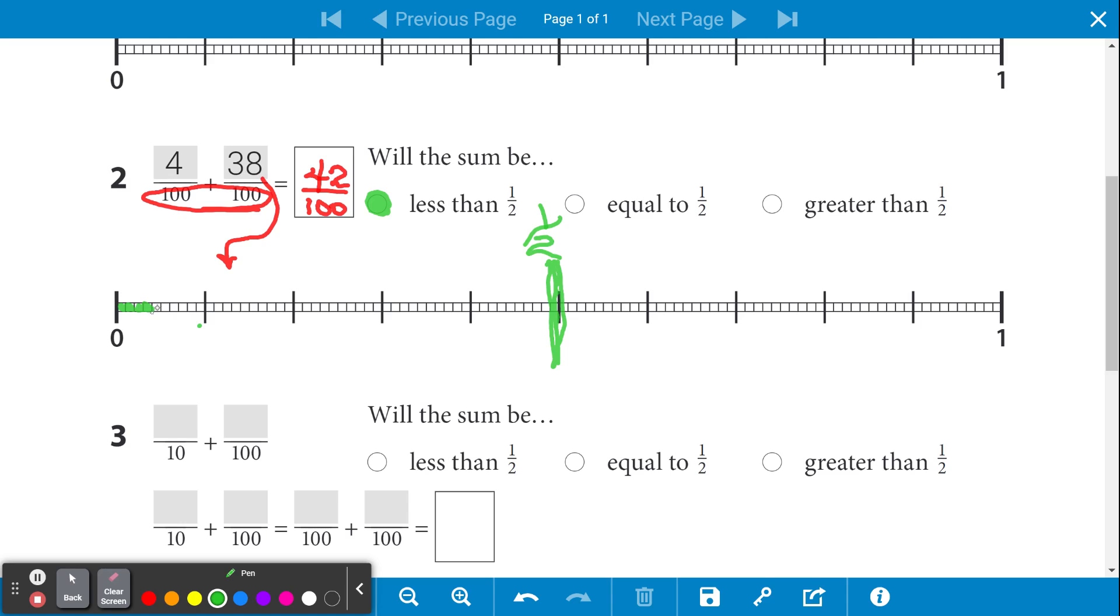Now, if I'm going from here to where the 38 would go, I'm going to count up from the 4. I'm going to either go up 40 and then come back 2, or go up 30 and go forward 8 more.